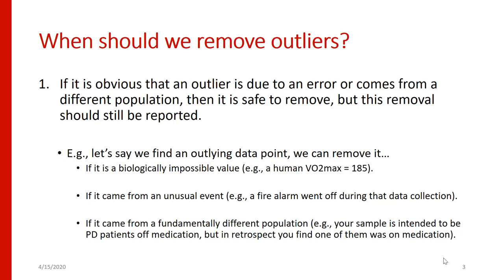Similarly, if we notice that one person has much slower reaction times on average than everyone else, maybe we go back and check our lab notebook and find that a fire alarm went off during that data collection. That person is actually different from everyone else in your experiment — they were tested under fundamentally different conditions. It would be reasonable in that situation to exclude that outlier.